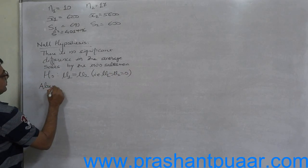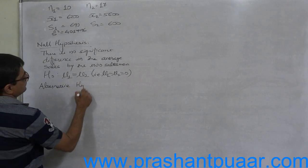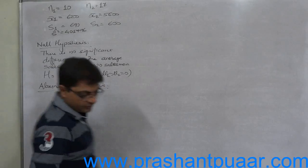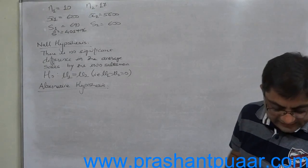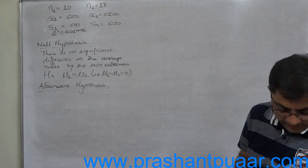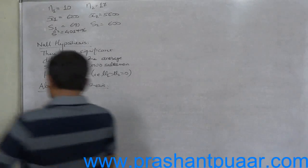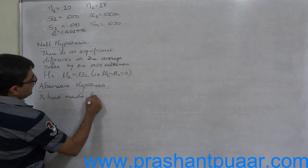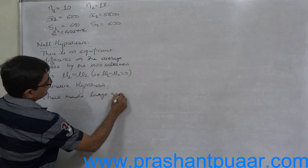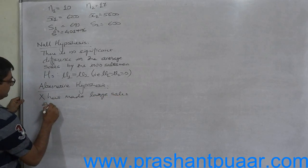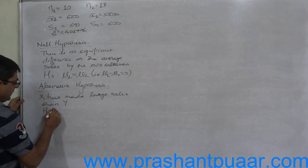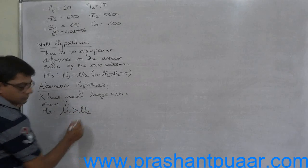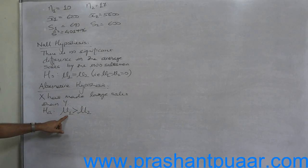Now alternative hypothesis, and that is readily available from the question: of the two salesmen, X claims that he has made larger sales than Y. So X has made larger sales than Y.